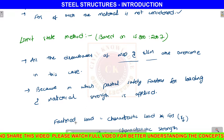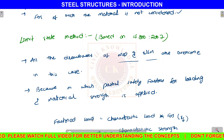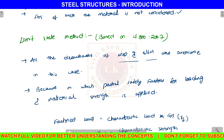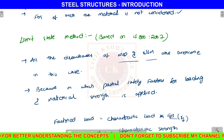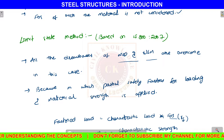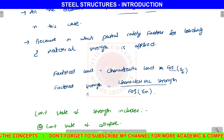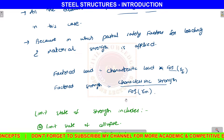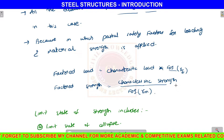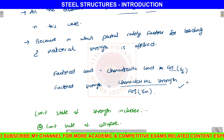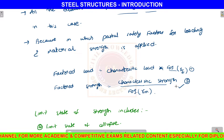In the limit state method, we consider working stress — accounting for service loads — and also ultimate loads. This overcomes the working stress drawback. The ultimate load method's drawback is that material strength is reduced. To overcome both drawbacks, the limit state method is used. The two drawbacks are overcome in the design of the limit state method.